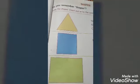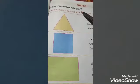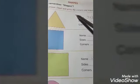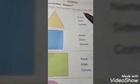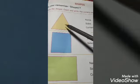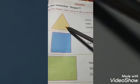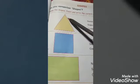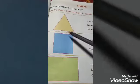Let us start now. Do you remember shapes? Name the shapes, count and write the corners and sides. This is a triangle. There are three sides — 1, 2, and 3. There are three sides in a triangle.